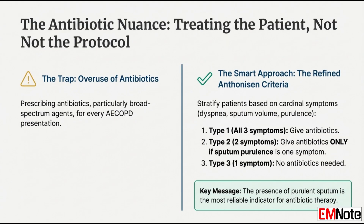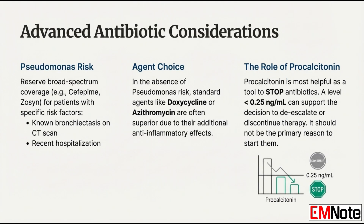For antibiotics, we must use the Anthonisen criteria, using purulent sputum as the main guide. Give antibiotics for a type 1 exacerbation — all three symptoms: more dyspnea, more sputum volume, and more sputum purulence. For a type 2 exacerbation with only two symptoms, only give antibiotics if sputum purulence is one of them. If it's just more shortness of breath and more volume, hold off. Type 3 is just one symptom — no antibiotics needed. To guide stopping antibiotics, procalcitonin is an excellent tool: a level below 0.25 nanograms per milliliter strongly supports de-escalating or stopping altogether.